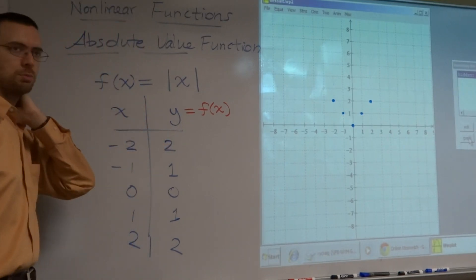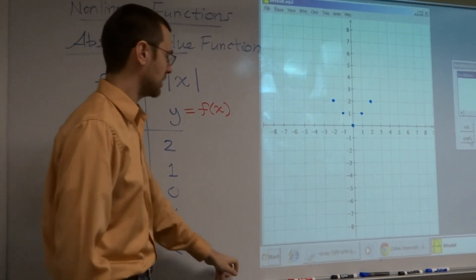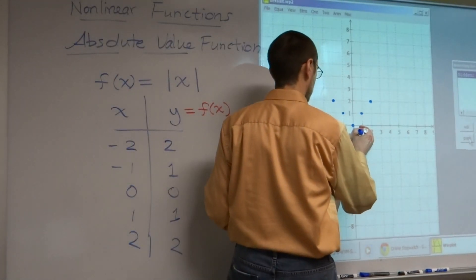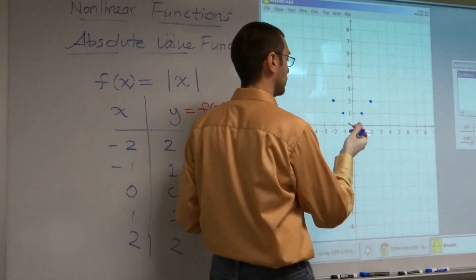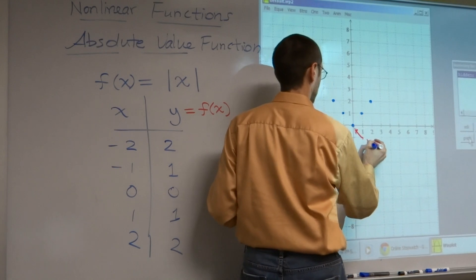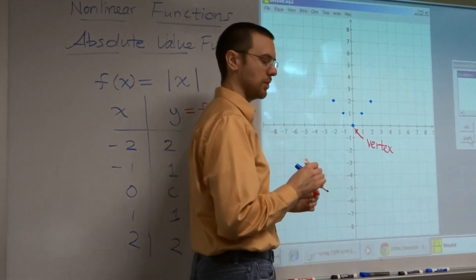Well, it doesn't quite look like the parabola, but it does look like I might have... There's a real marker. Here's a real marker. I do have a vertex here.